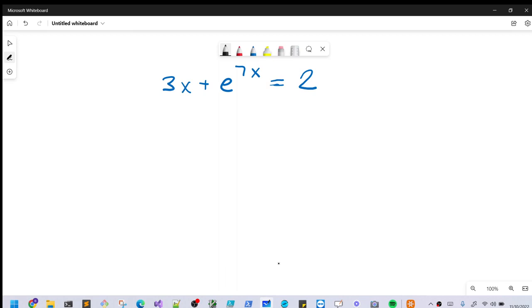We've got another interesting exponential problem on the board. We have 3x plus e to the 7x equals 2. And to get started, I want to do something. I don't really like dealing with this addition between here. So what I'm going to do, let's raise both sides to the e. We'll make both sides the exponent of e. So we'll write it as e to the 3x plus e to the 7x equals e squared.